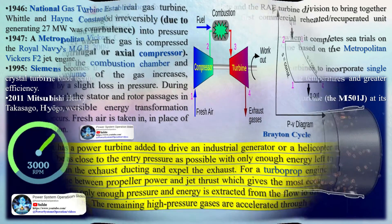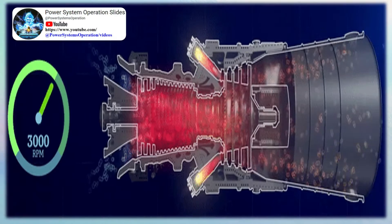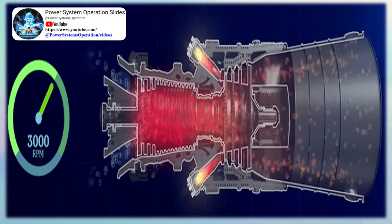If the engine has a power turbine added to drive an industrial generator or helicopter rotor, the exit pressure will be as close to the entry pressure as possible, with only enough energy left to overcome pressure losses in the exhaust ducting. For a turboprop engine there will be a particular balance between propeller power and jet thrust. In a turbojet engine, only enough pressure and energy is extracted to drive the compressor; the remaining high pressure gases are accelerated through a nozzle to propel an aircraft.